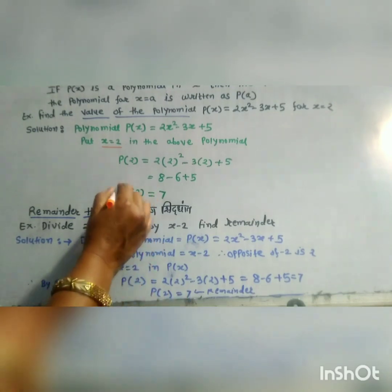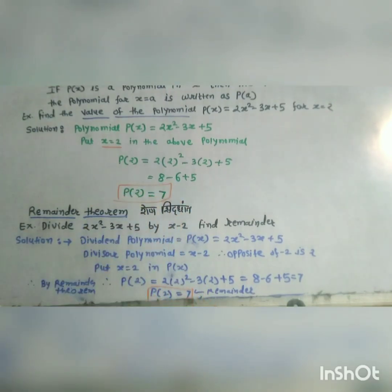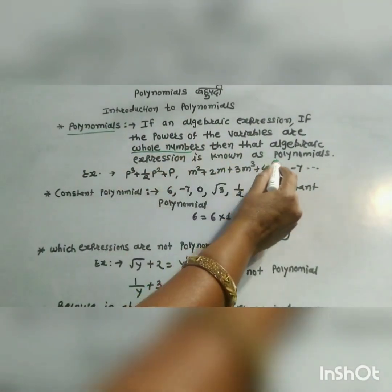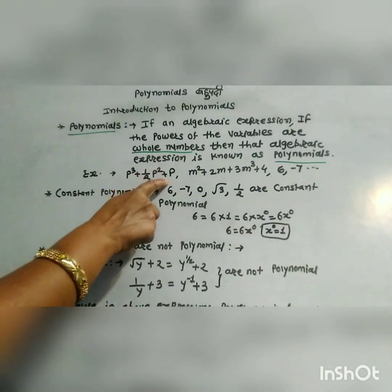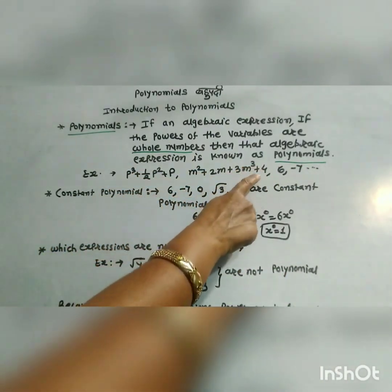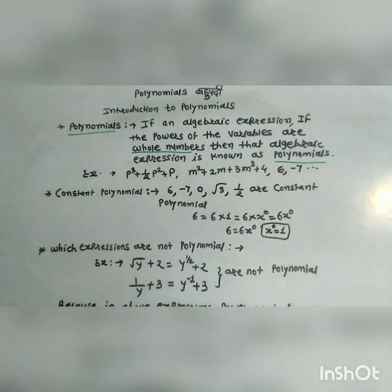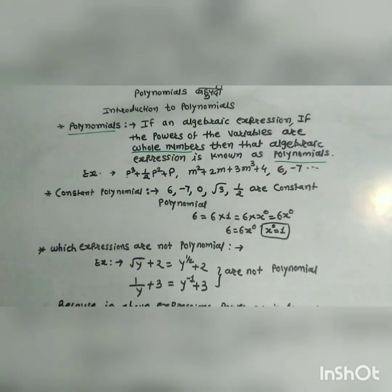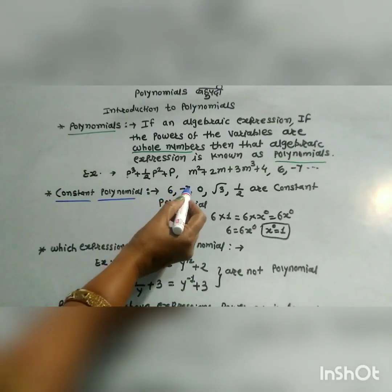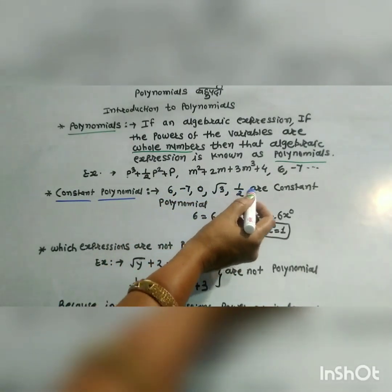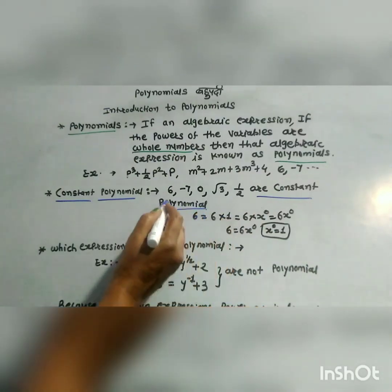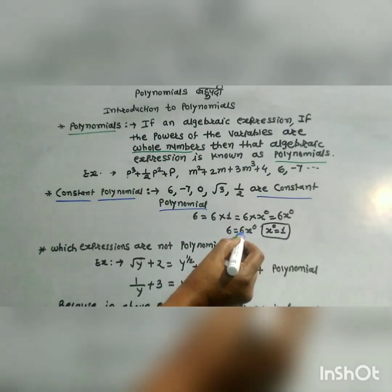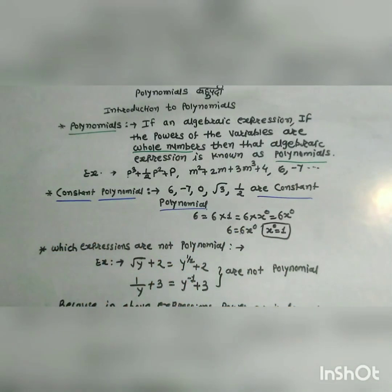Which expressions are called polynomials? When the powers of variables are whole numbers, the algebraic expression is known as a polynomial. For example: p cubed plus half p squared plus p; m squared plus 2m plus 3; m cubed plus 4; 6; negative 7. These are all polynomials because the powers of variables are whole numbers. Constant polynomials include 6, negative 7, 0, root 3, and one-half. For example, 6 equals 6 times x raised to 0.